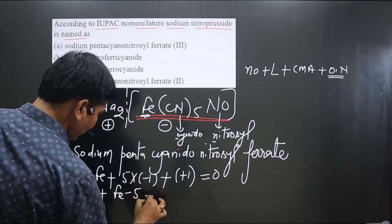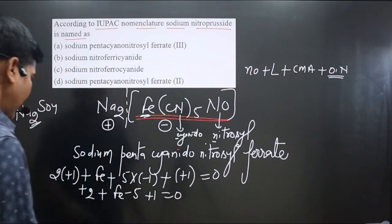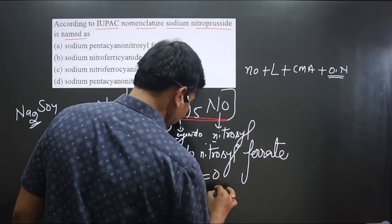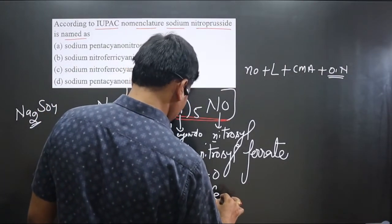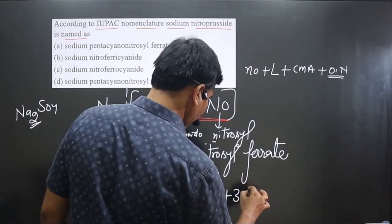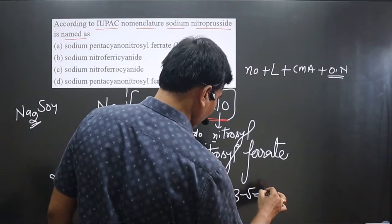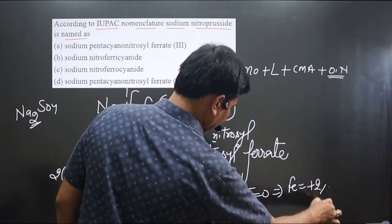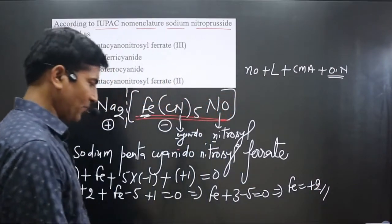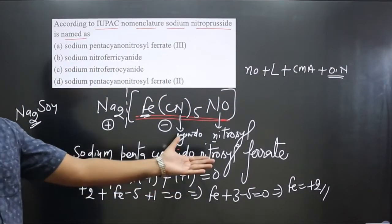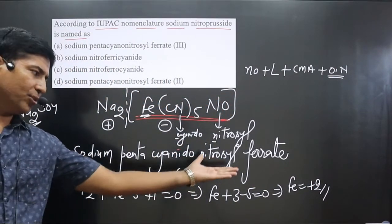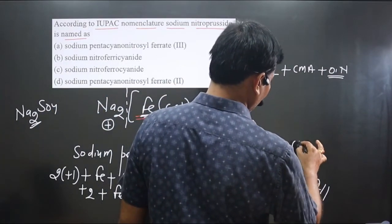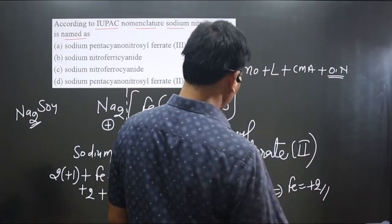Setting the overall charge equal to zero: +2 + Fe + 5(−1) + 1 = 0, which gives +2 + Fe − 5 + 1 = 0, so Fe − 2 = 0, therefore Fe = +2. The oxidation number of iron is +2, which is written in Roman numerals as (II).